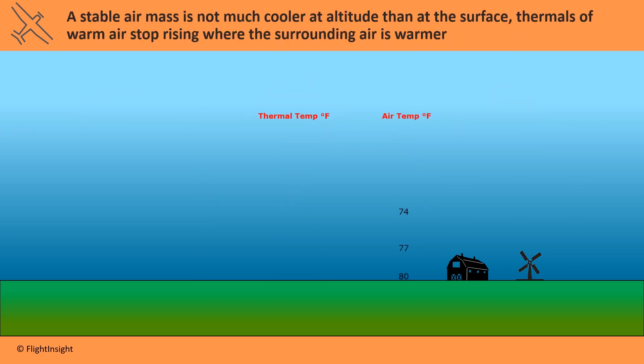Warm air rises as long as it's warmer than its surrounding air. Thermals of warm air will not rise any higher when the environmental air temperature is warmer. So here we see a level where the thermal of 70 degree air will stop rising due to surrounding air being 74 degrees warmer.